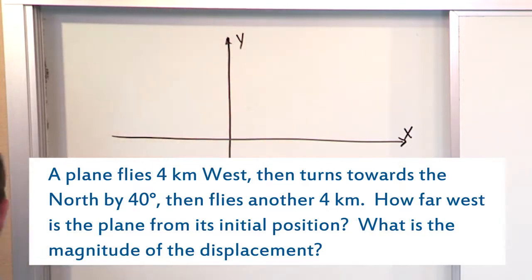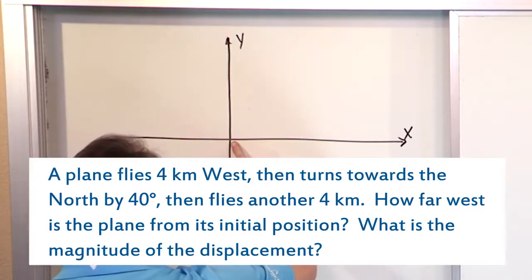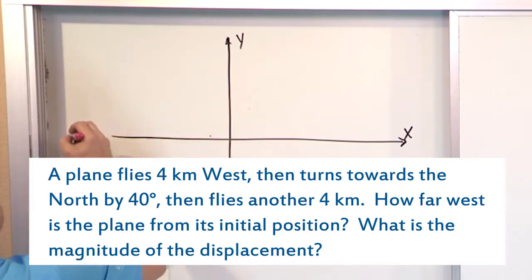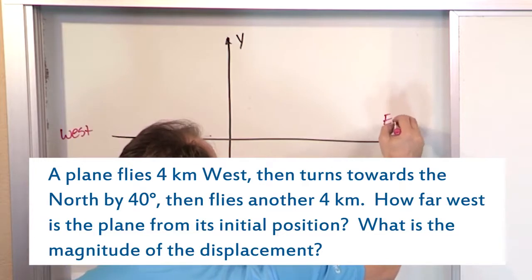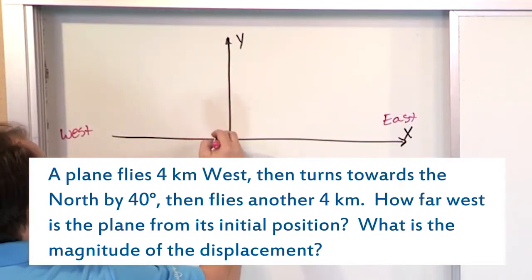So, the first part says a plane flies four kilometers west. We're going to assume it starts at the airport or something from the origin here, and it goes four kilometers west. This is, again, west. This is, of course, east, and north and south. So, we have, let's compress things a little bit.